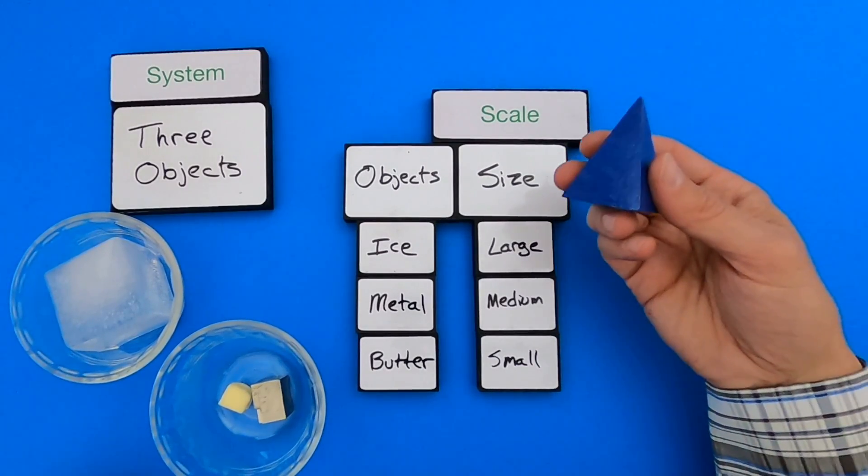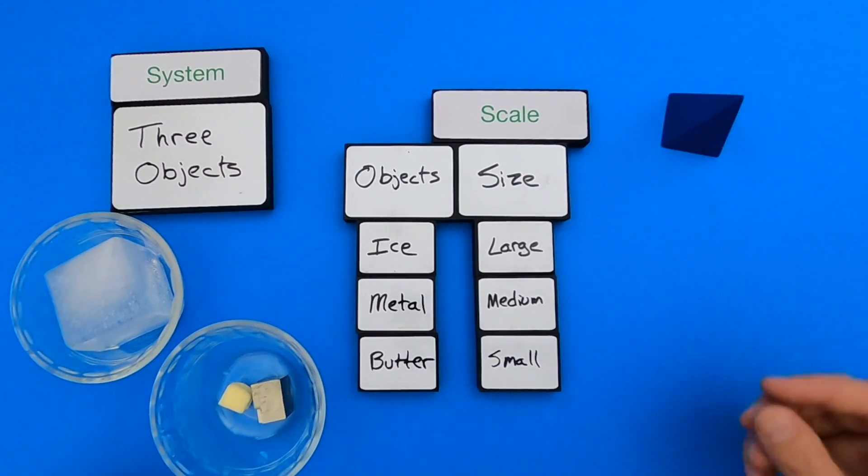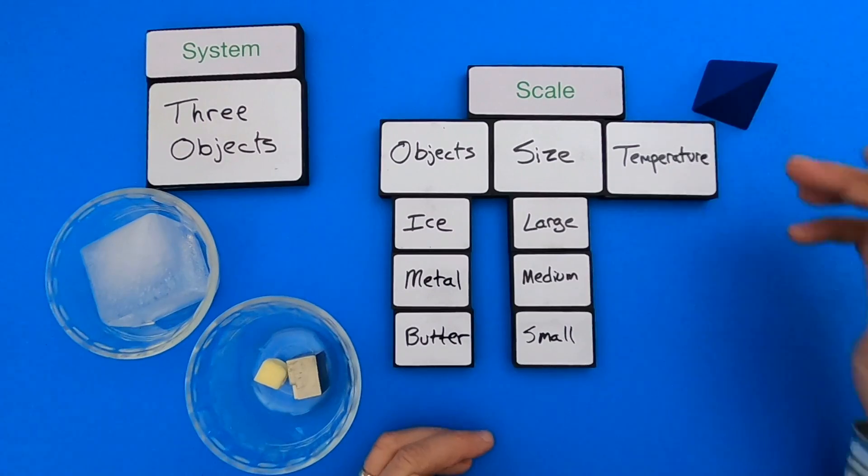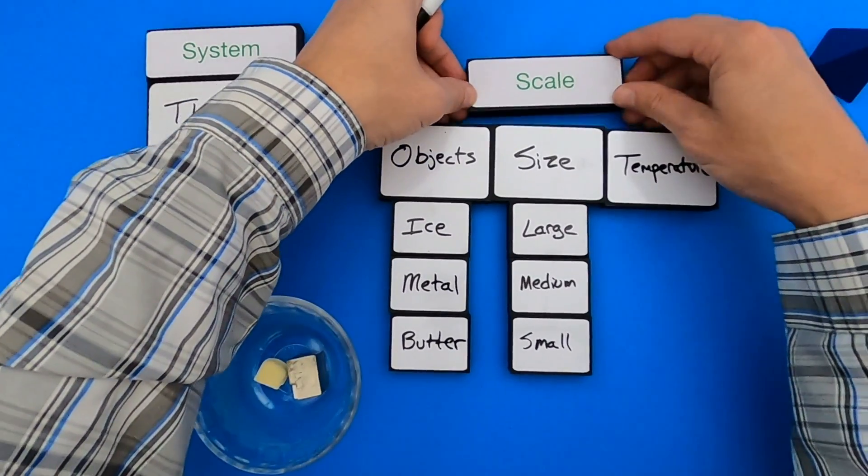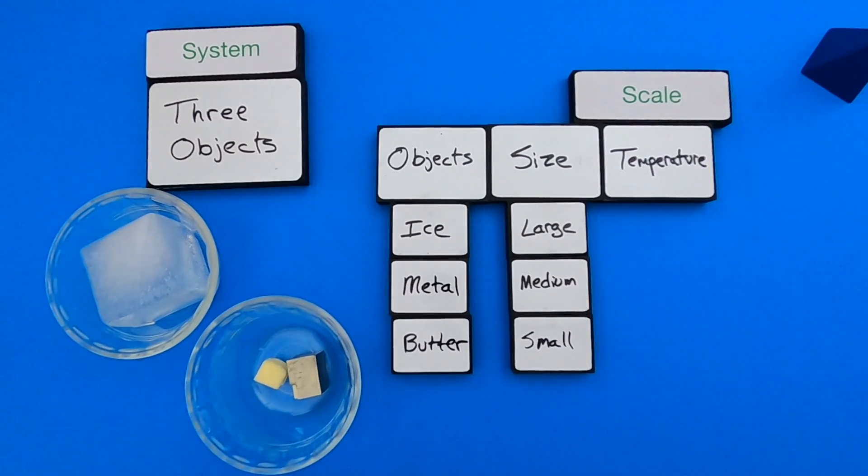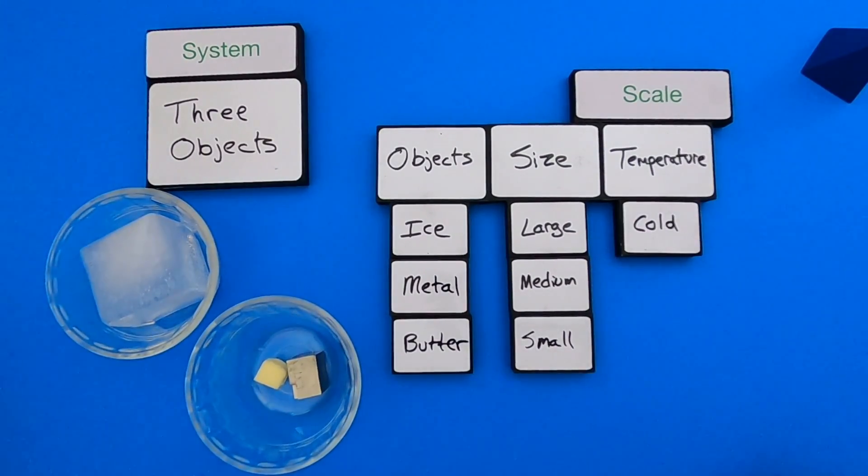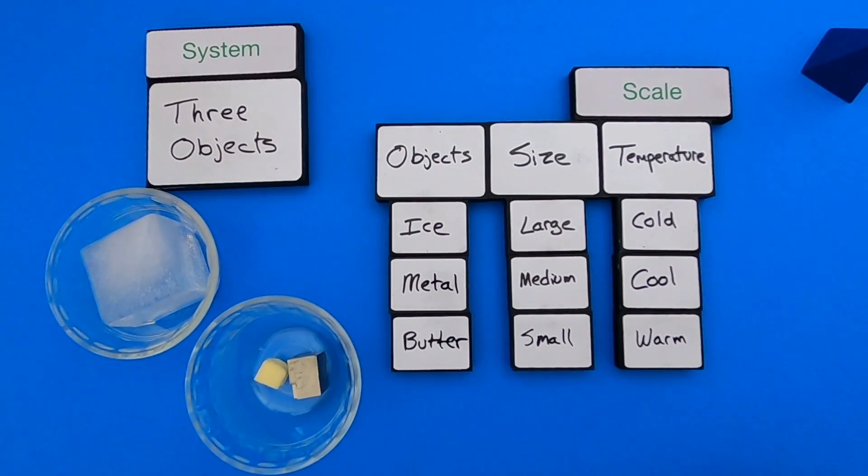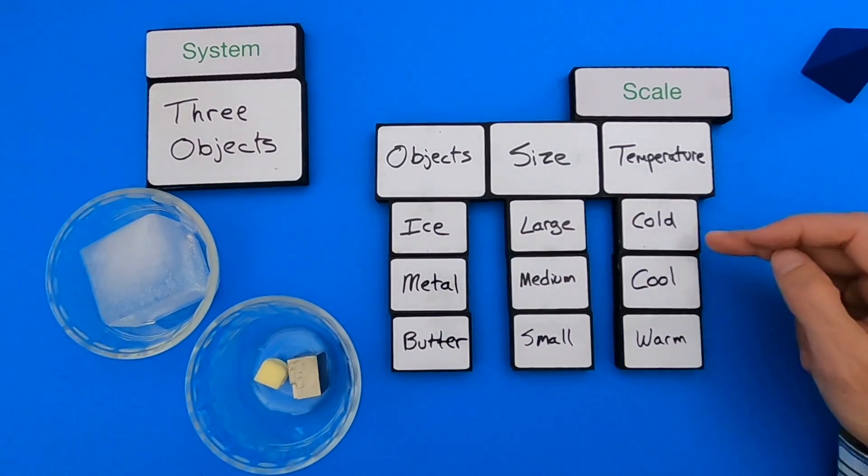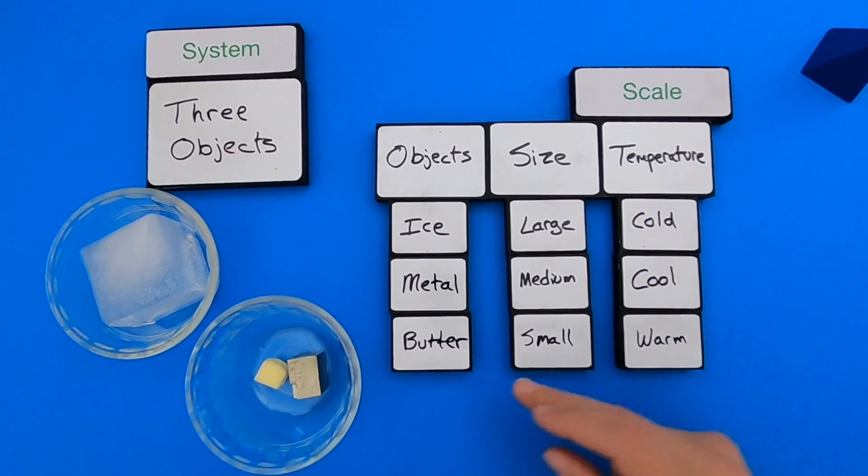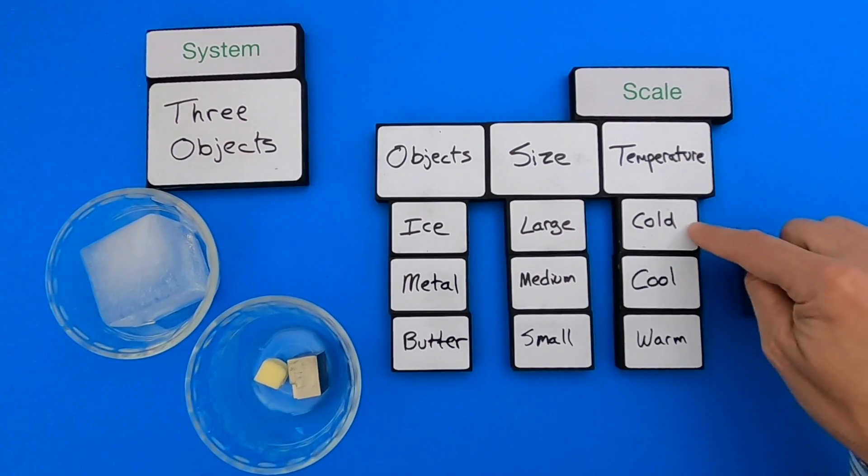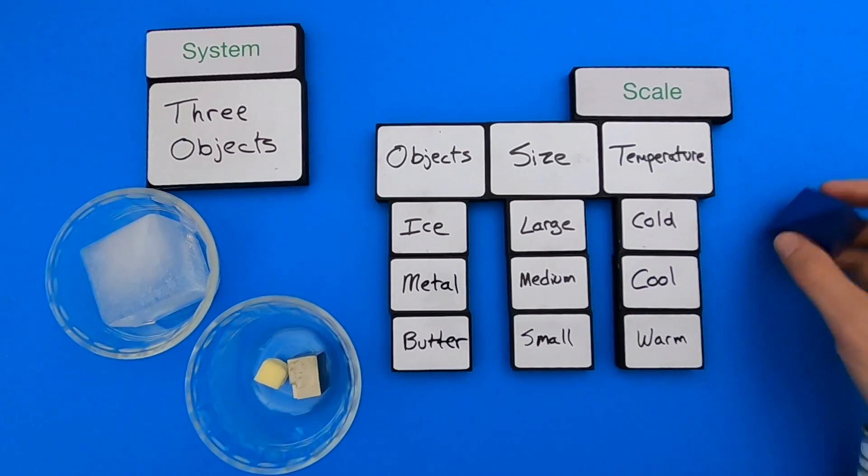Now we might look for a different type of scale. Something that jumped out to me right when I was holding them was temperature. So temperature is another type of scale. If I were to define the temperatures that I felt, the temperatures I felt in the ice was very cold, the metal is cool, and then the butter is the warmest. And so we could say there is a scale going from the very cold ice all the way to the very warm, which is going to be butter.